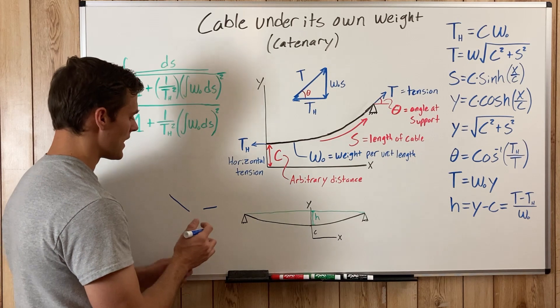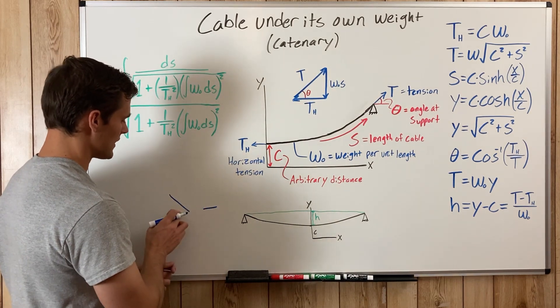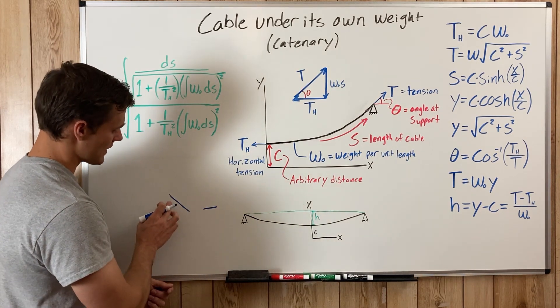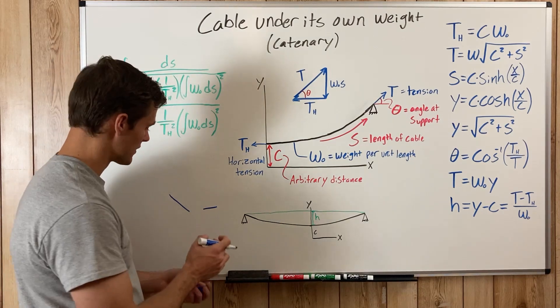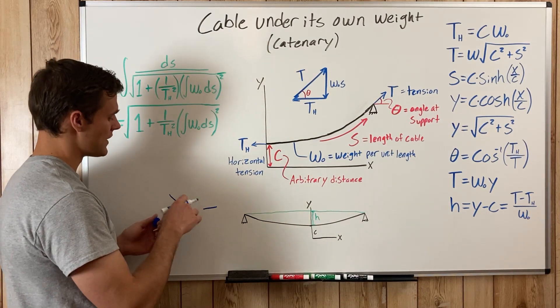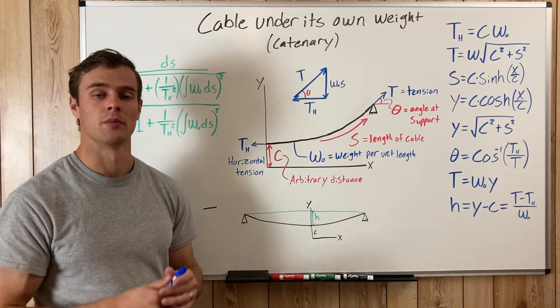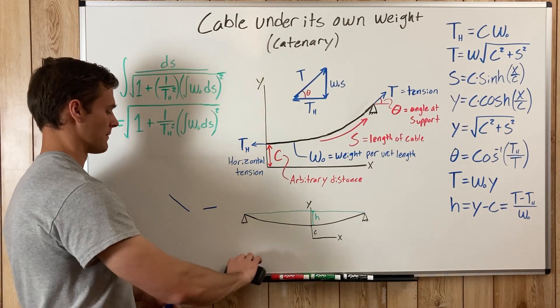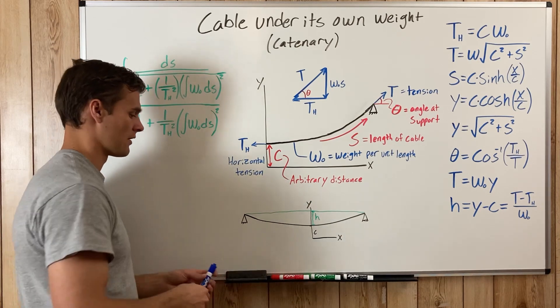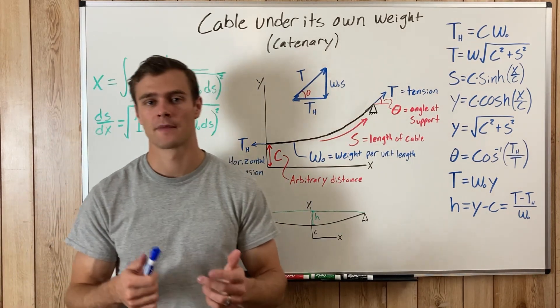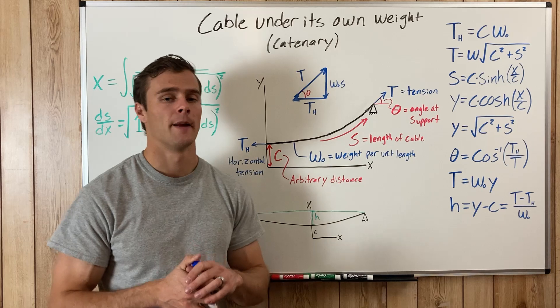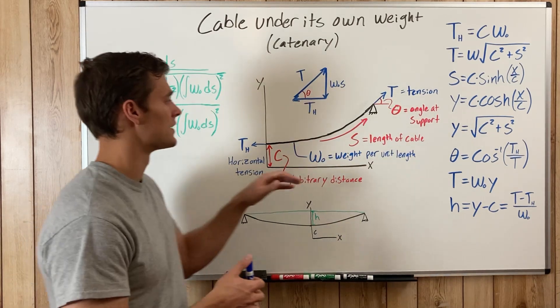But there's more weight pulling down on this one than this one because this one is longer. So the difference in weight pulling down like that creates that hyperbolic shape, and that's why we have to analyze catenary loads differently than distributed loads.